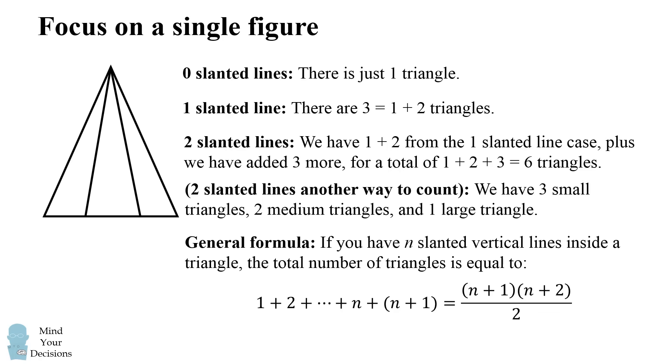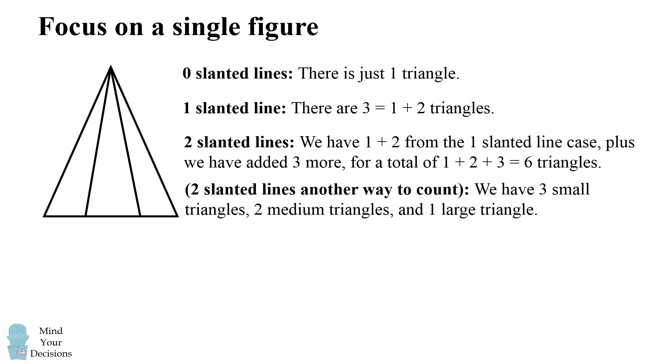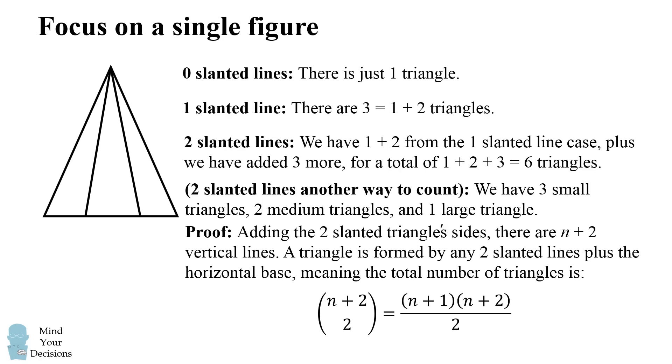So how do we know this formula actually holds? Well, let's do a little proof of this. Now let's add the two slanted lines of the triangle. These will be the sides of the triangle. So how many slanted vertical lines are there? Well, there will be the n on the interior plus the two vertical sides of the triangle.